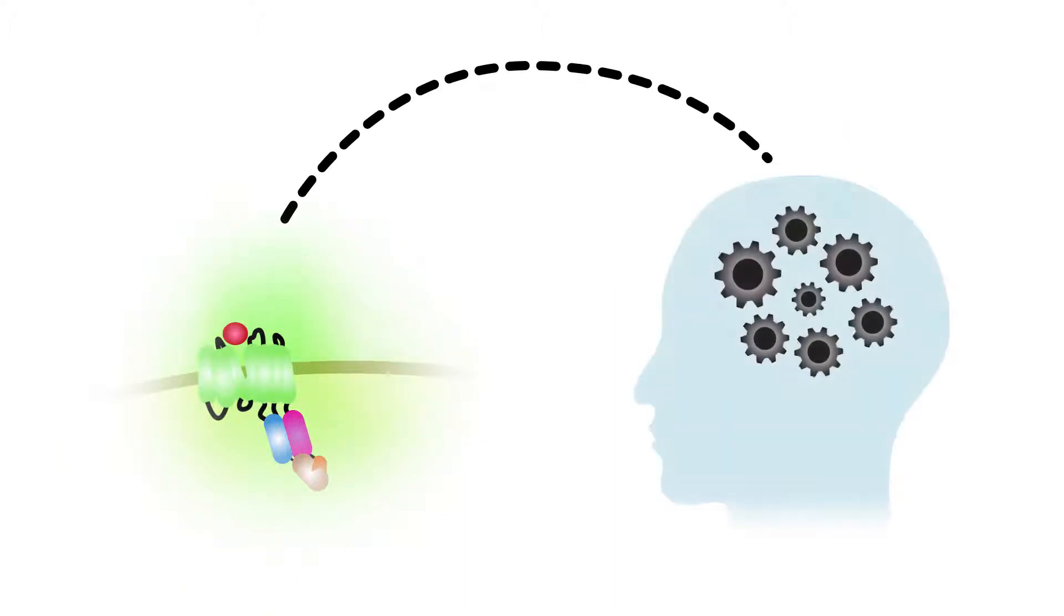The problem with these sensors is that scientists couldn't use them to link a neuromodulator's effects to a specific behavior, because they couldn't pinpoint when the sensors were activated.